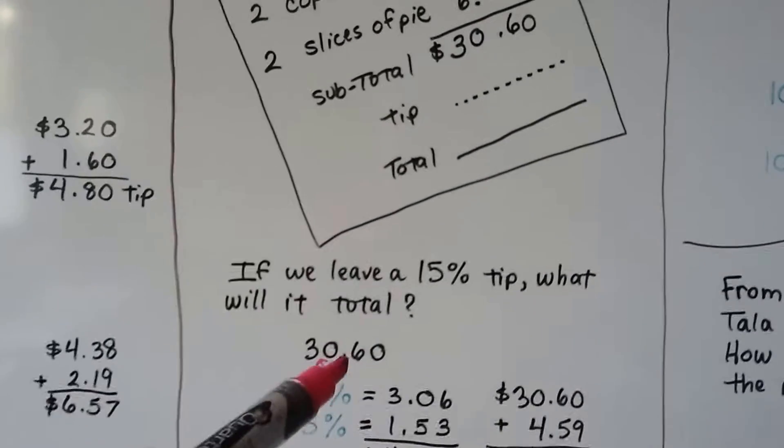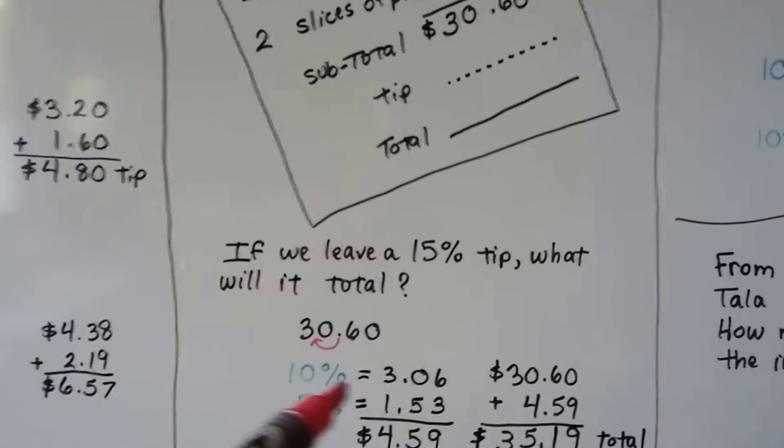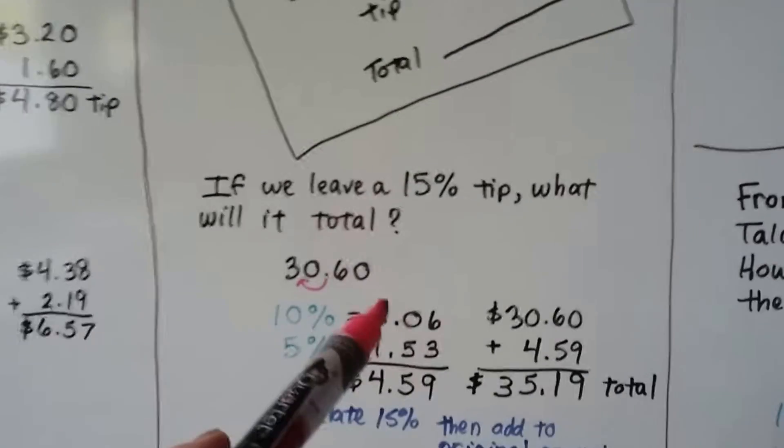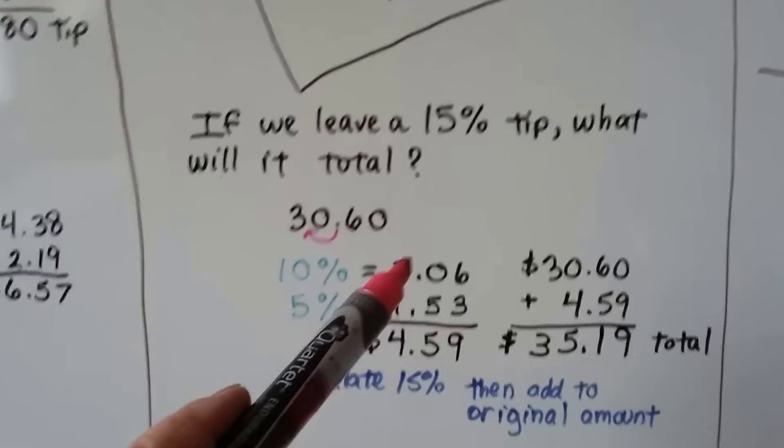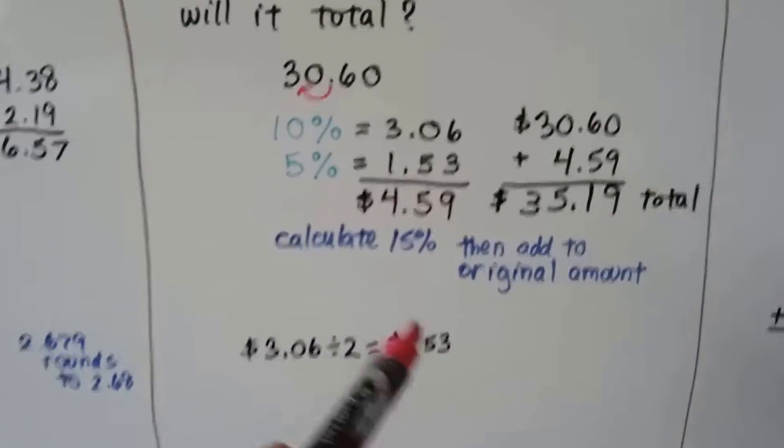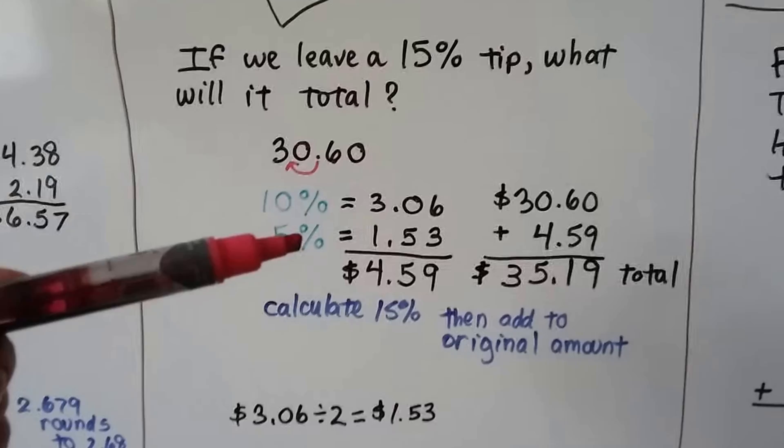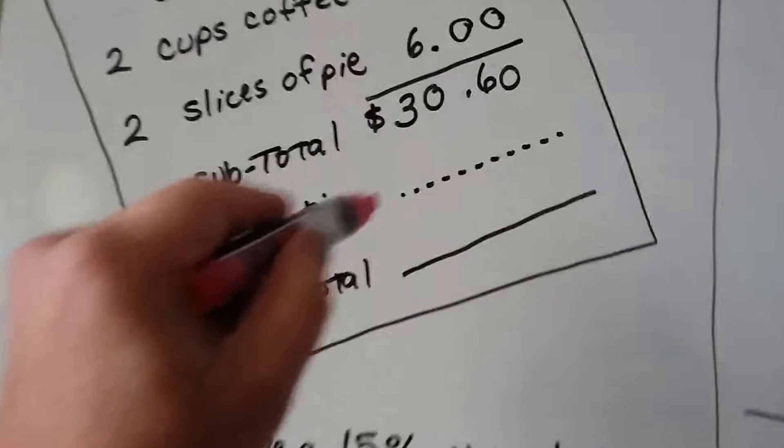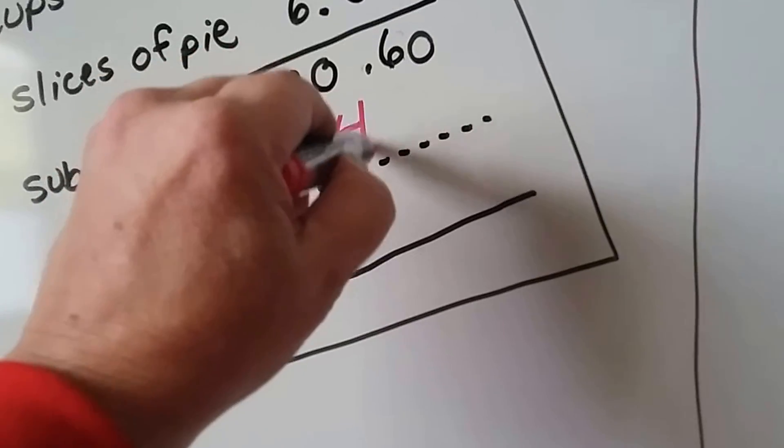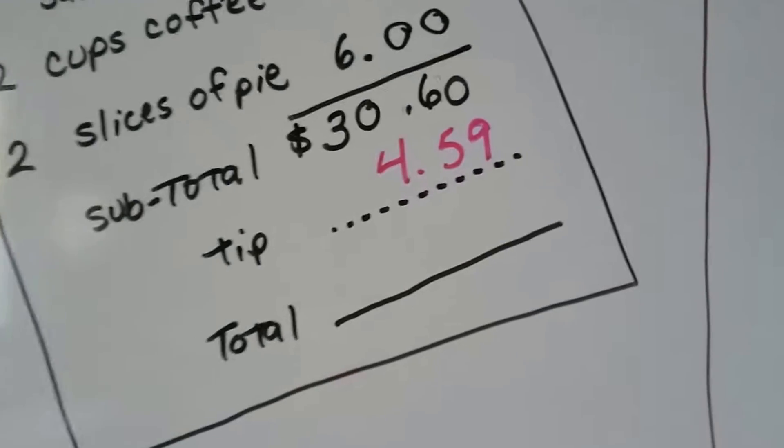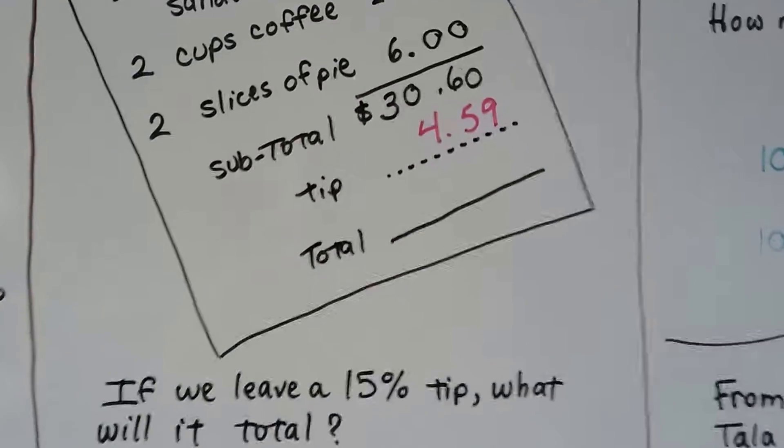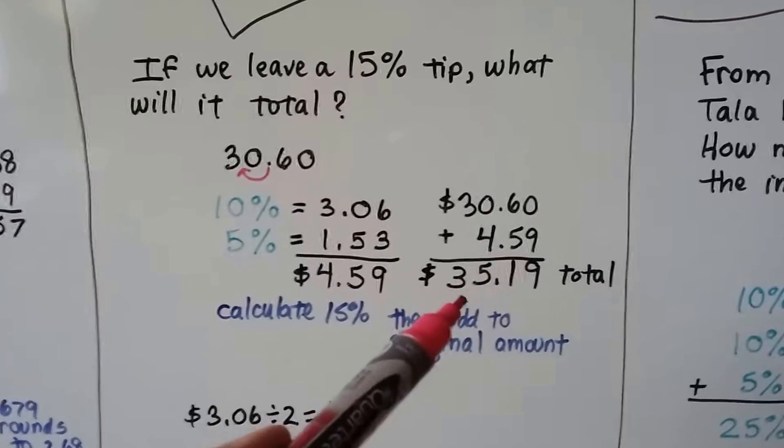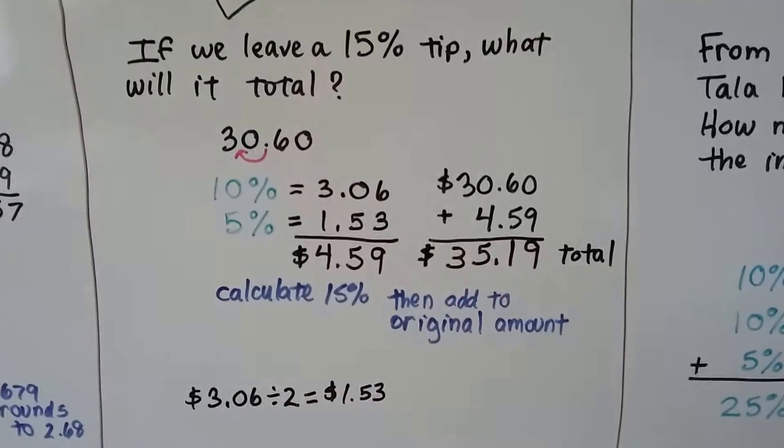We do the decimal move from $30.60. We get $3.06 for ten percent. Then we cut this in half, we divide the $3.06 by two, and we get $1.53. Now we add that five percent, $1.53, to the ten percent and get $4.59. So the tip is going to be $4.59. Now we need to total it to find out how much we're paying. We add the $30.60 to the $4.59 and come up with a $35.19 total.